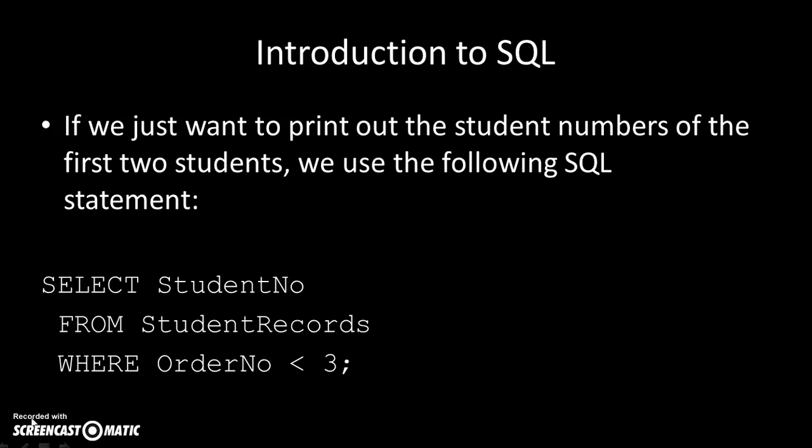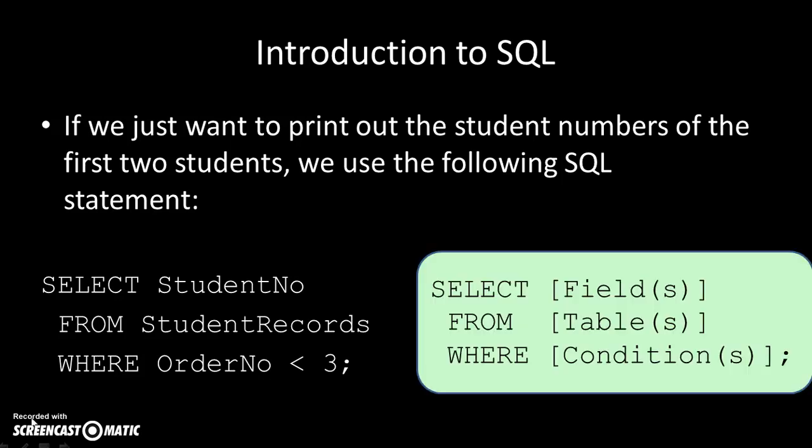If I just wanted to find the first two students who joined the course, I could say: SELECT student_number FROM student_records WHERE order_number < 3. That's numbers one and two. The general way a SELECT statement with a condition works is: SELECT a particular field or fields (separated by commas) FROM a table or tables (separated by commas) WHERE some condition is true. So in this case, we only print out the first two student numbers where the order number is less than three.